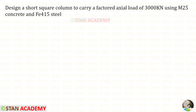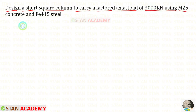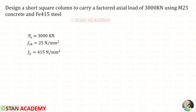Hello everyone. Today we are going to design an axially loaded short square column. Let us read the question and write the given data. Design a short square column to carry a factored axial load of 3000 kilo newton using M25 concrete and Fe415 steel. The factored load PU is given as 3000 kilo newton, FCK is given as 25, and Fe415.